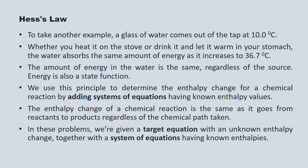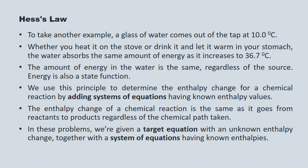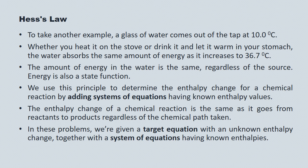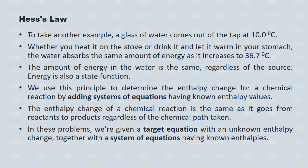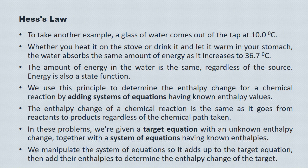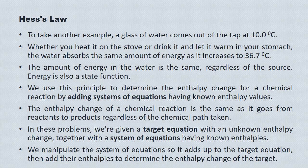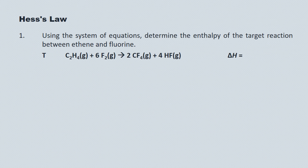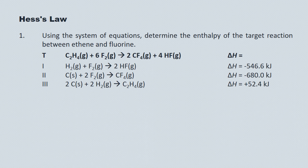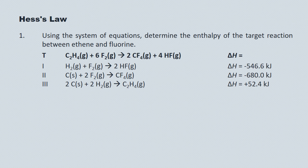So to solve Hess's Law problems, we're given a target equation that we don't know the enthalpy change for. And we're given a system of equations that we have known enthalpies for. They've been tabulated. We run these experiments under standard conditions, which allows us to tabulate them. And then what we do is we manipulate that system of equations until it adds up to the target equation. Once they finally do, we add up their enthalpies, and that becomes the enthalpy of the target. So here's an example. We're looking at ethene reacting with fluorine to produce tetrafluoromethane and hydrogen fluoride. And we don't know the enthalpy for it, but we do have a short system of equations here that we can manipulate to add up to the target.